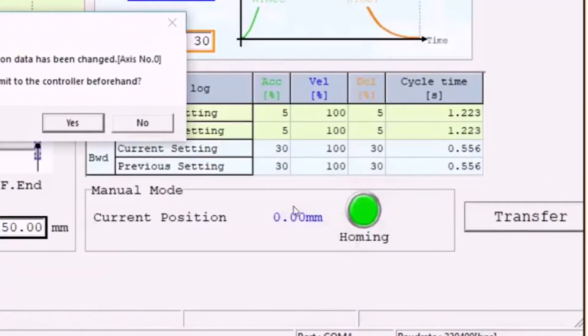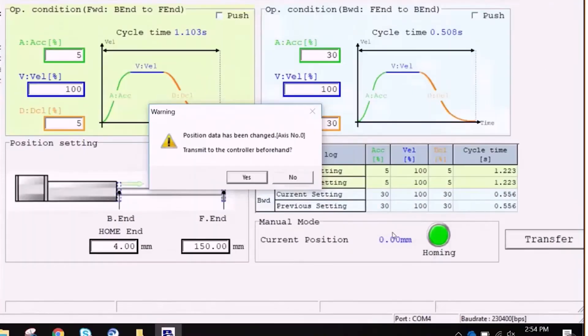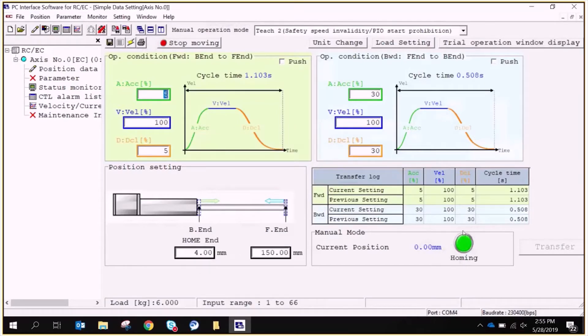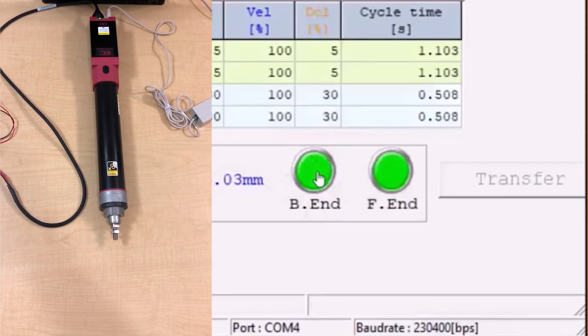Afterwards, click transfer to send the information to the built-in controller. Click Yes to confirm. Next, click the homing button to home the actuator to its zero position.